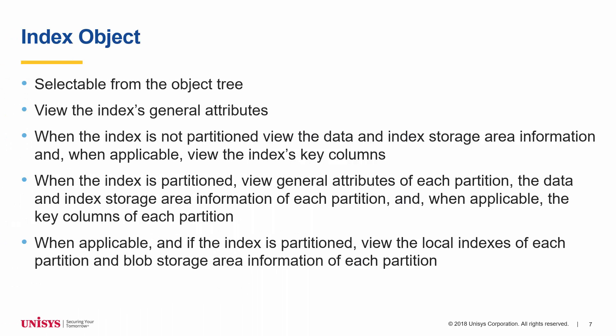On the UDS Object Explorer page, selecting an index object displays the index's information across one or two tabs in the object viewer. The first tab, General, displays general attributes and, when the index is not partitioned, data and index storage area information and key columns. The second tab, Partitions, is visible when the index is partitioned and displays for each partition: general attributes, data and index storage area information, key columns, local indexes, and blob storage area information. The information is only displayed when it is relevant for the partition.